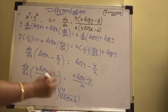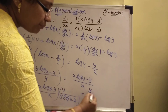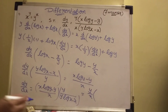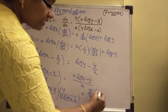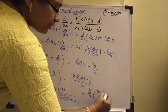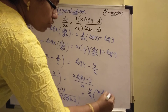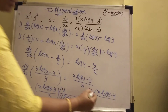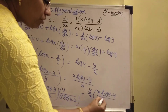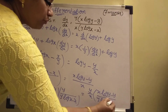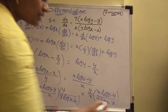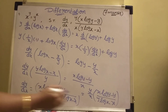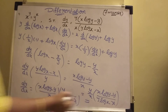So dy by dx equals y by x, multiplied by (x log y minus y) divided by (y log x minus x). That is the final answer.